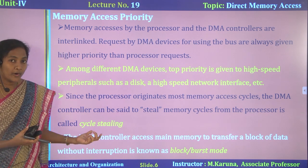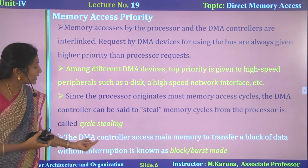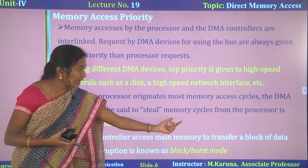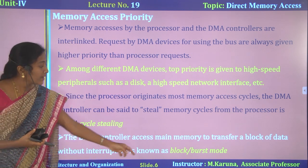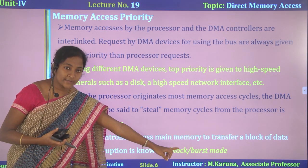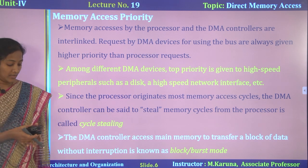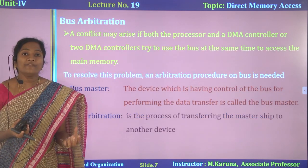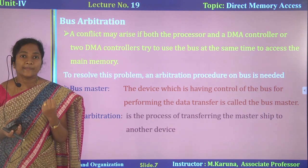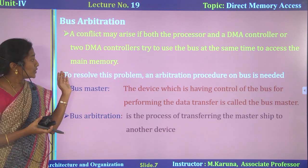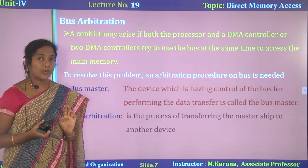Important points regarding the DMA controller: the DMA controller accessing main memory to transfer a block of data without interruption is known as block or bus mode. A conflict arises when the processor and DMA controller request the bus at the same time. To solve that problem, an arbitration process is required.